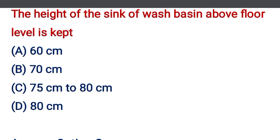The height of the sink above the floor level is kept — option A: 60 cm, option B: 70 cm, option C: 75 to 80 cm, option D: 80 cm. The correct answer is option C, 75 to 80 cm.